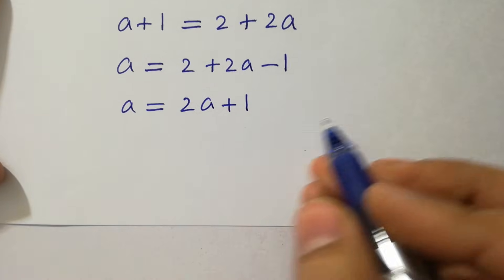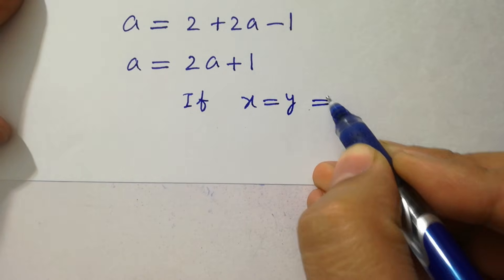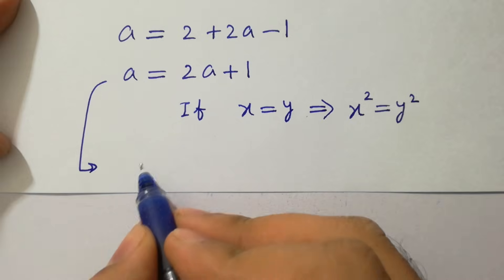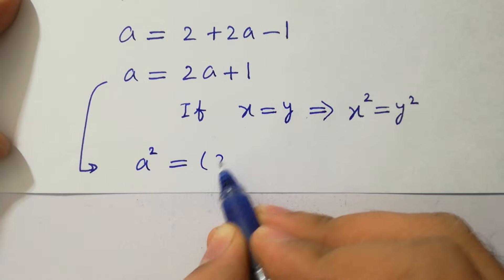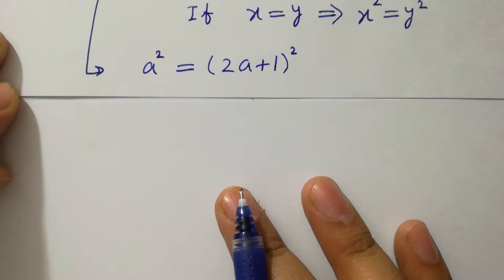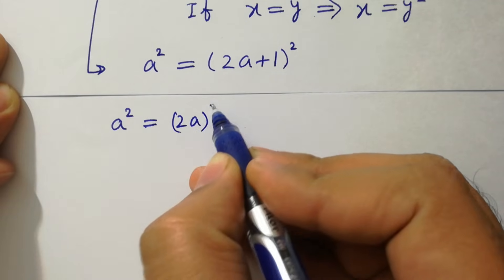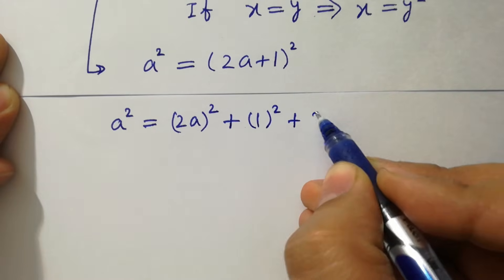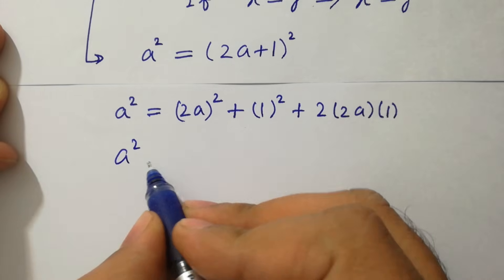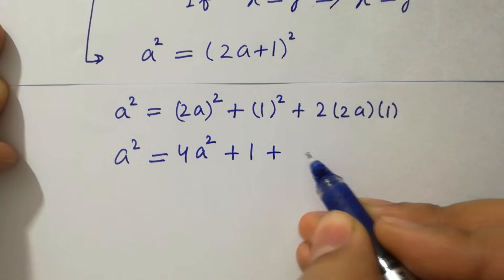As we know, if x = y then x² = y². So we can take squares on both sides. We have a² = (2a+1)². Expanding using (a+b)² = a² + 2ab + b², we get a² = 4a² + 1 + 2×2a×1, which gives a² = 4a² + 1 + 4a.